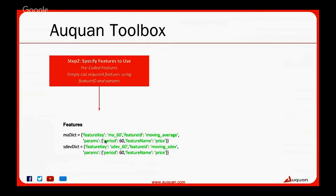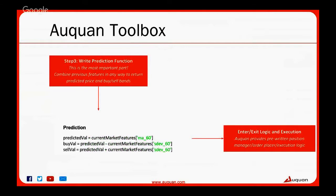The toolbox has most common features already pre-written. However, if you find a feature that isn't written, we provide functionality to write your own — but what we prefer is that you tell us what's missing and we develop it for you, so you're not spending time building features. You spend your time on the next part: writing the prediction function.